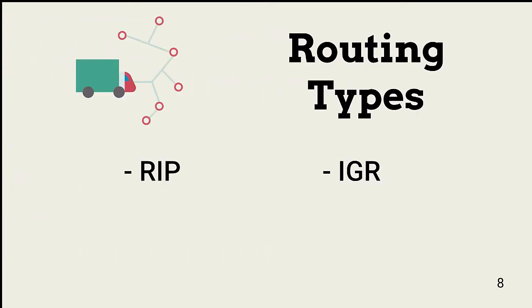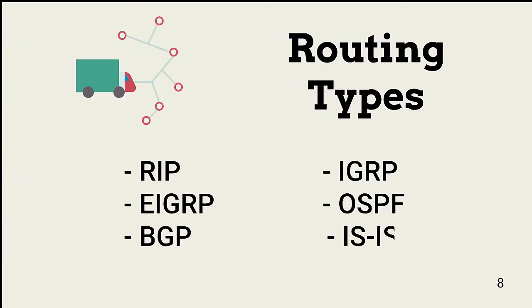Now that we're familiar with routing protocol categories, let's look at six protocol types: RIP, IGRP, EIGRP, OSPF, BGP, and IS-IS.